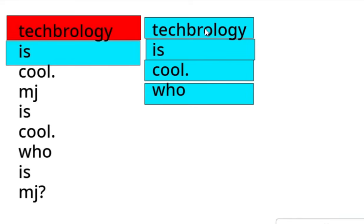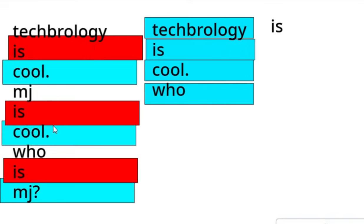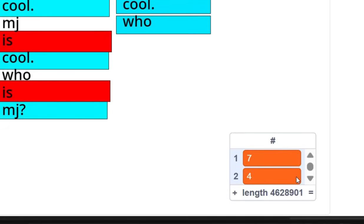So the word that comes after technology is 'is'. So then it'll add under the token technology, the word is. Then it'll move on to the next word, which is is. So then it'll look at every single word that comes after is, which is cool, cool, and MJ. And then it'll add that under the word is. And it'll do it for every single word in the whole entire data set. And then after that, it'll add it to a list.